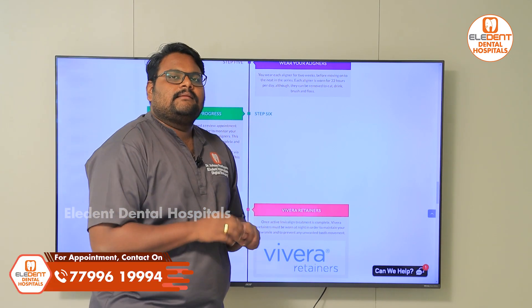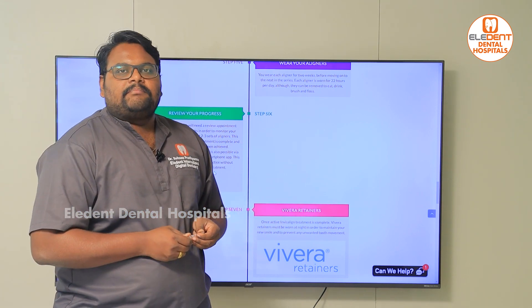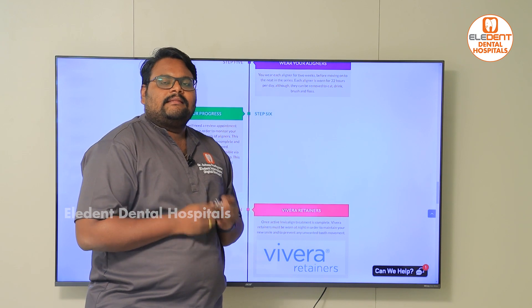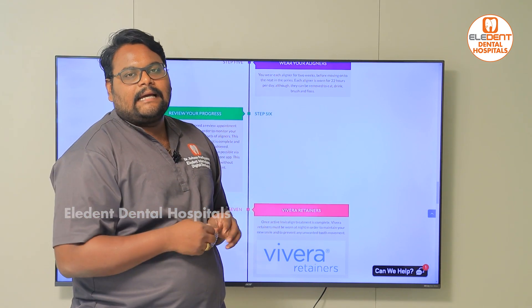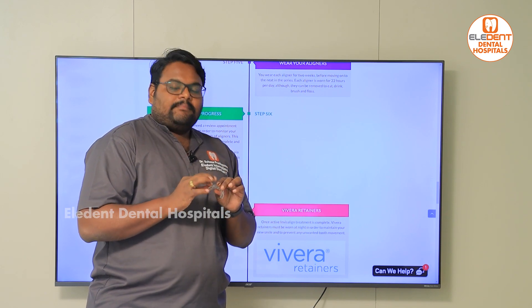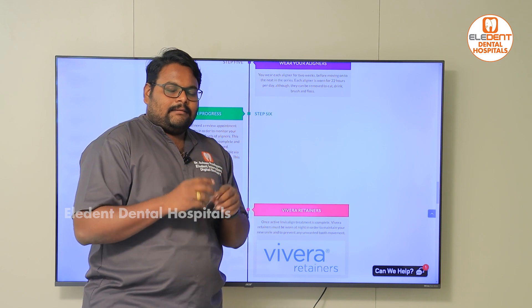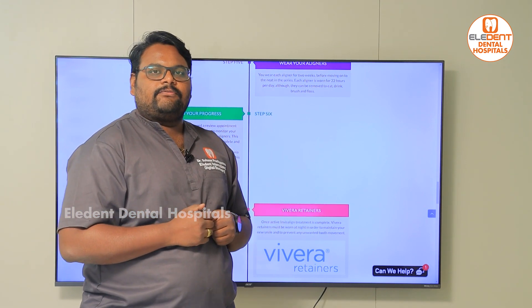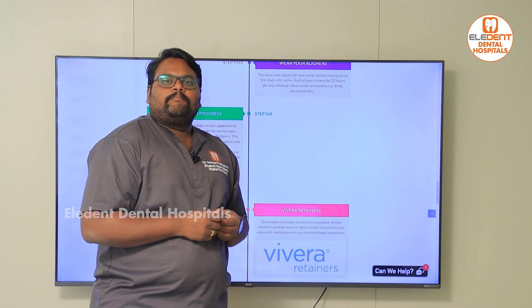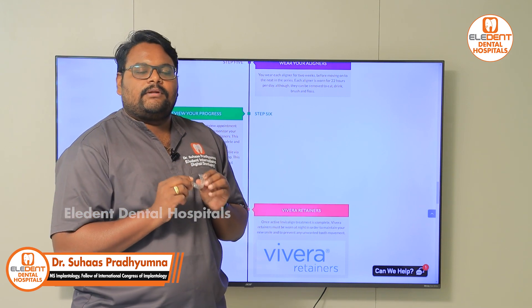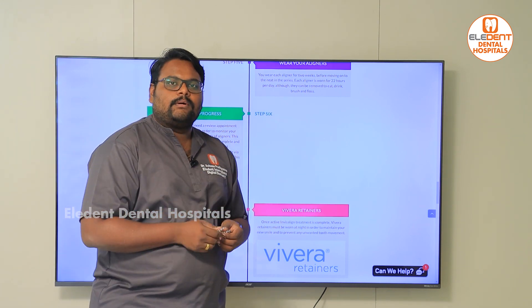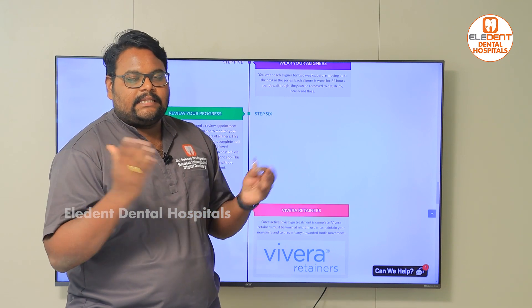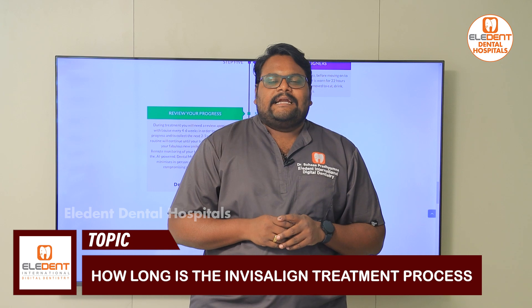The last and final phase is your retainers. Retainers are essentially your aligners themselves — once your entire treatment is over, say after eight months or one year, when you have achieved your final tooth position, the dentist will recommend retainers. These are the same aligners but slightly thicker, to retain the final position achieved. They are also useful as night guards for people with a habit of night grinding. We recommend all patients to wear these for a minimum of one year after treatment, ideally up to two years, to prevent any relapse of tooth movement.